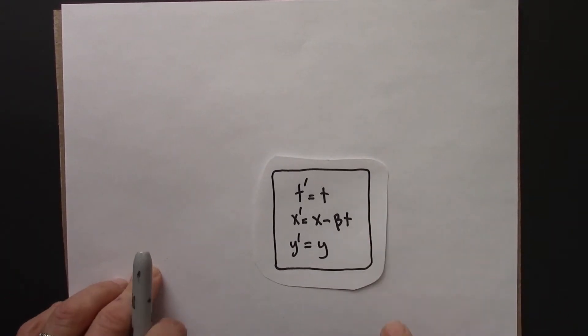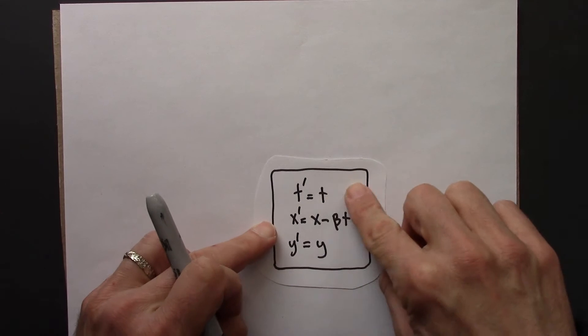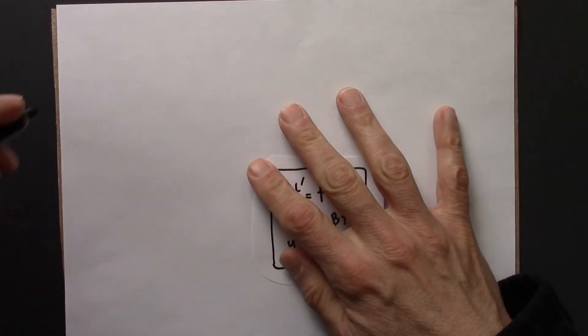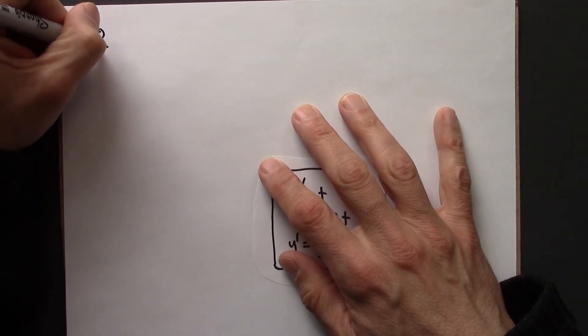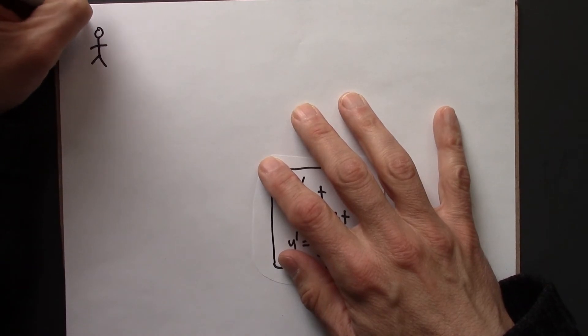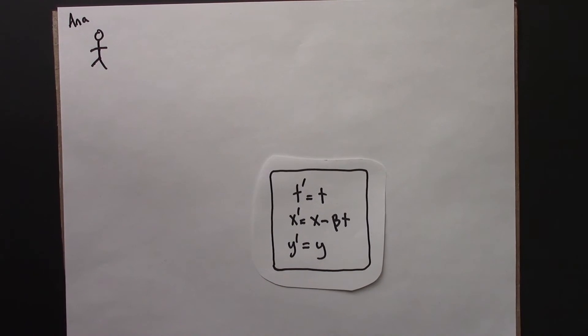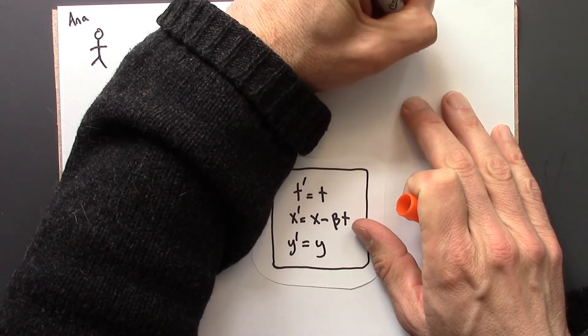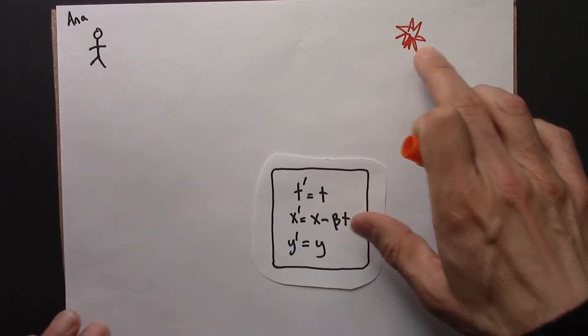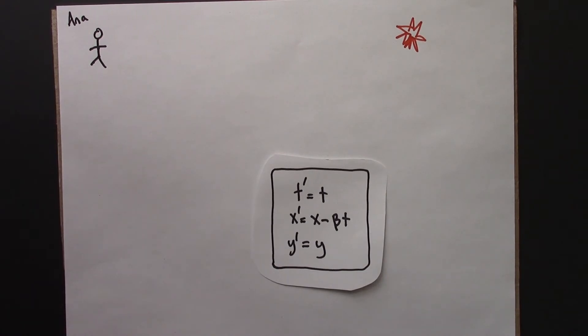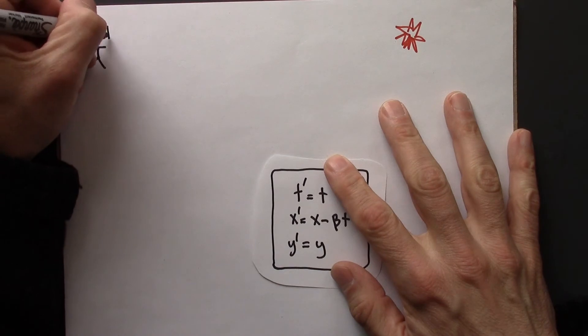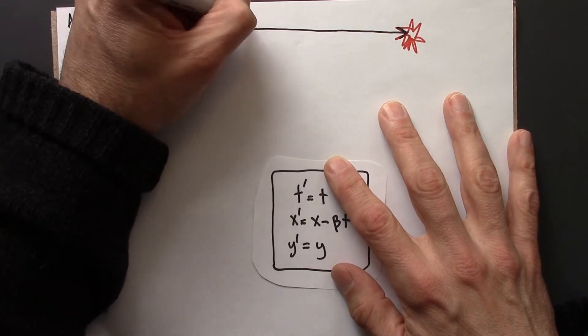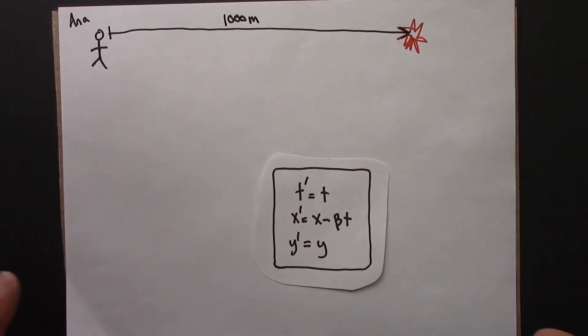Okay, let me solve this problem another way that will maybe help you see where this equation comes from, or what this is telling us. So, here, this is going to be Anna. And then, let's say the event is going to occur over here. That's supposed to be an explosion. And this distance is 1,000 meters. So, that's the scenario according to Anna.